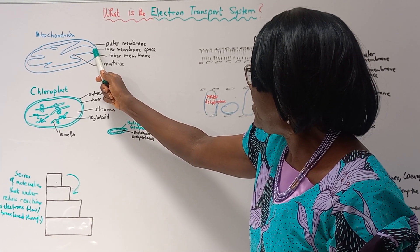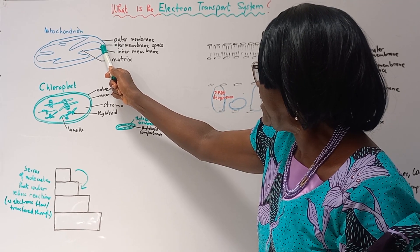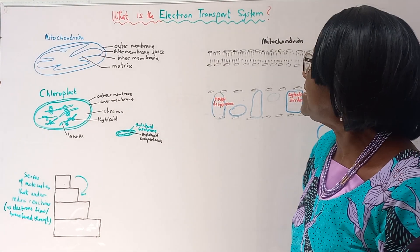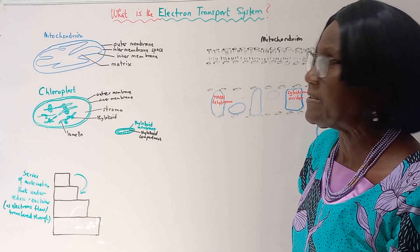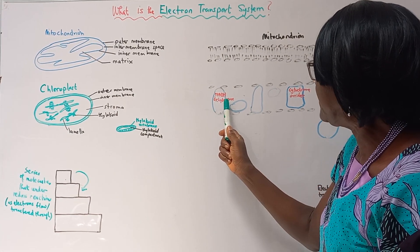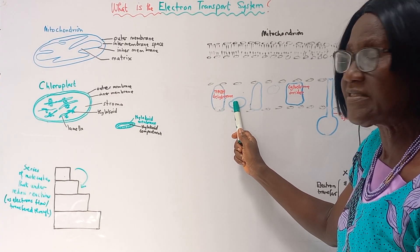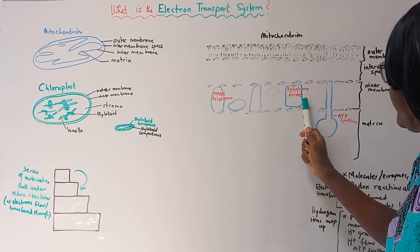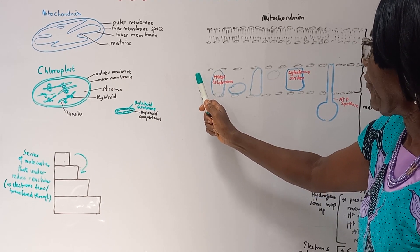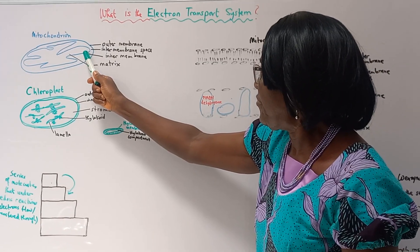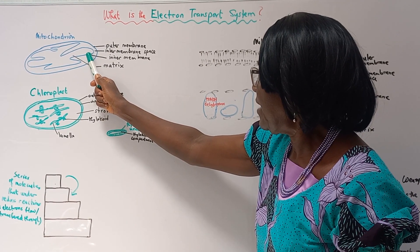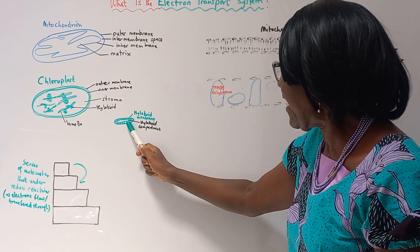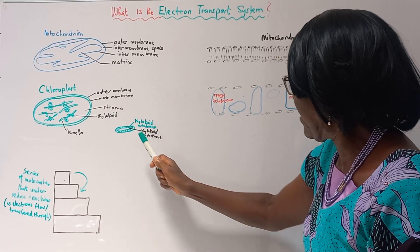Notice also that the intermembrane space of the mitochondrion is fluid. So now the question: what is the electron transport system? It is enzymes, coenzymes, and membrane proteins of all special kinds. These molecules are on the inner membrane of the mitochondrion and on the membrane of the thylakoid of the chloroplasts.